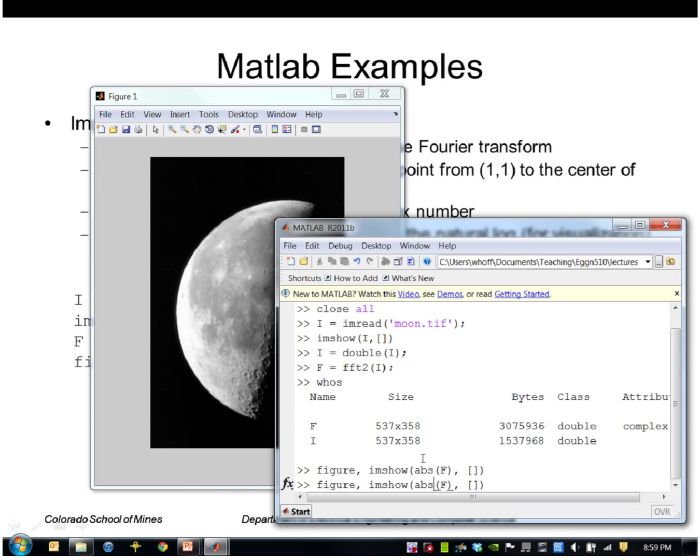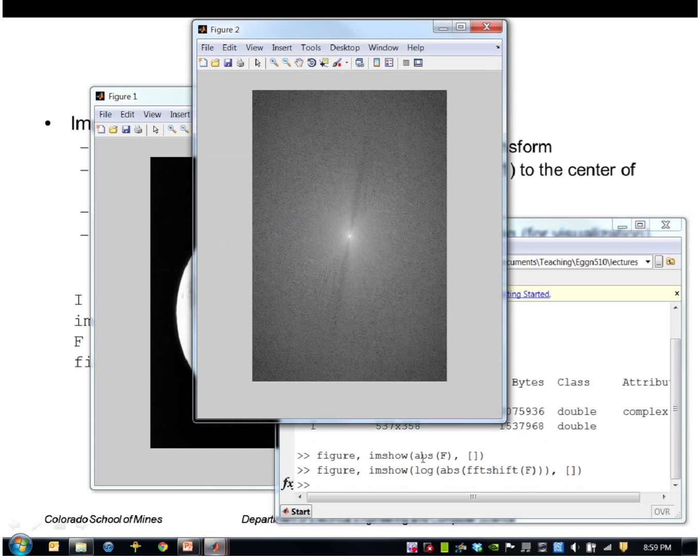So I'll do this again, but I'll show, first I'll shift it to the middle using FFT shift. So that just moves everything to the middle. And then I'll take the absolute value and then the log of that. So that enhances the low values. So now we can see the DC, that high value is directly in the middle of this transform.